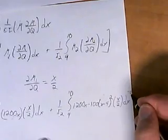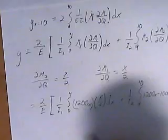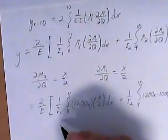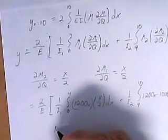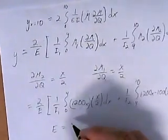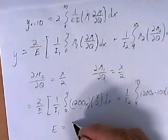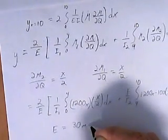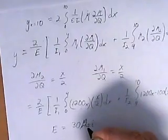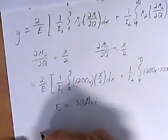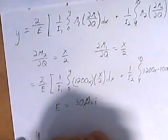So now all we have to do is just go ahead and integrate that, which is a fun job. But I'm going to skip that work and let you do it if you want to. But E is equal to 30 msi or mega psi. So that's for that calculation. So, moving on.